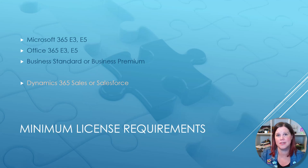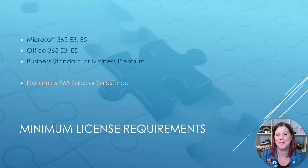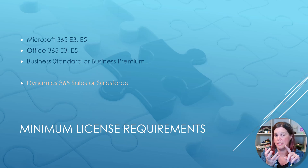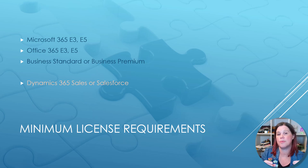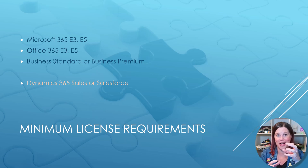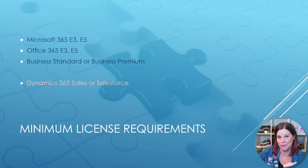So how do you buy it and what's it going to cost? Let's go through the scenarios. Minimum license requirements: Microsoft Copilot for Sales requires you to be using either Dynamics 365 Sales or Salesforce — those are the two CRMs it works with. You also need one of these Microsoft 365 licenses: Microsoft 365 E3 or E5, Office 365 E3 or E5, or Business Standard or Business Premium. These are the same prerequisites as Microsoft Copilot for Microsoft 365, because it's essentially a combination of Sales Copilot and Microsoft 365 Copilot features — plus you need one of those two CRM systems.